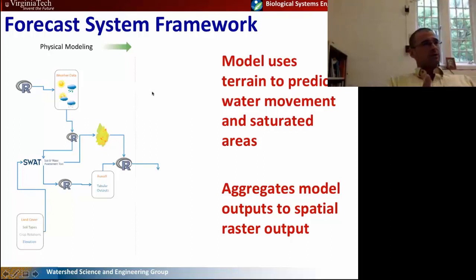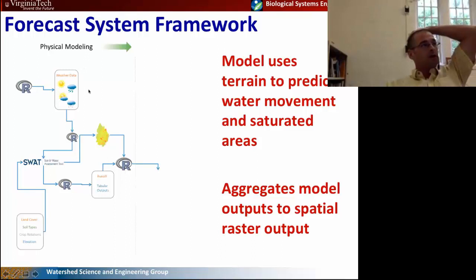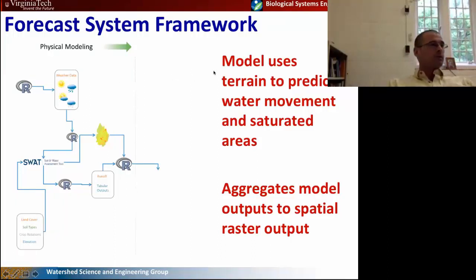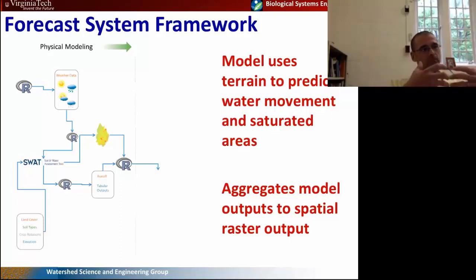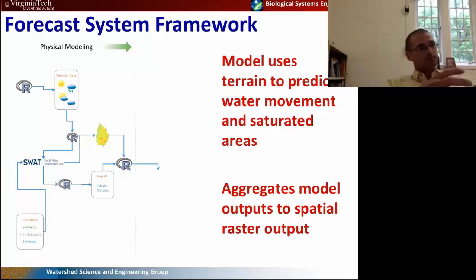Then we have the forecasting system framework — the brains behind the forecast. We take that static land use, soil, and elevation data, along with the dynamic daily weather forecast data, and bring that into our modeling framework. We use a derivative of the SWAT model called SWAT VSA — the SWAT Variable Source Area model. The model uses a terrain metric to predict water movement and where saturated areas form across the landscape, producing a spatial prediction at three-meter-square pixel resolution — a spatially explicit map of soil moisture content for every three-meter square in the watershed.